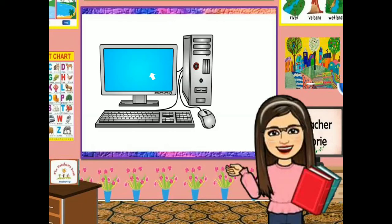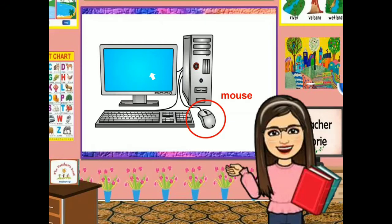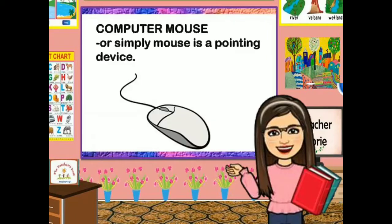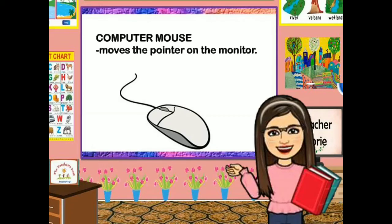This is a computer. This part is called the monitor. This is called the computer mouse. And this is the pointer. The computer mouse, or simply mouse, is a pointing device. The computer mouse moves the pointer on the monitor.